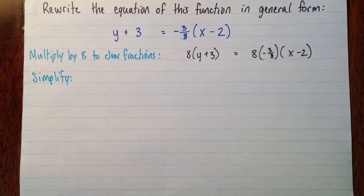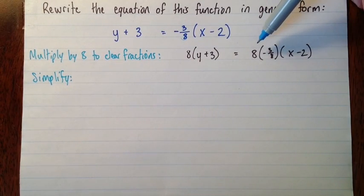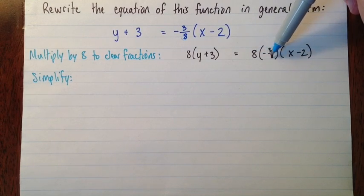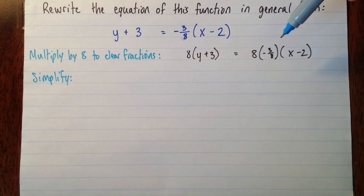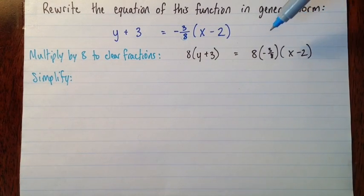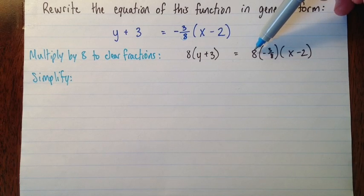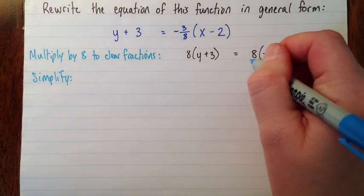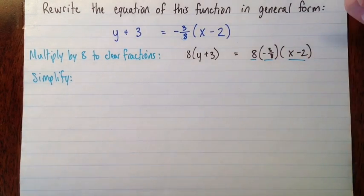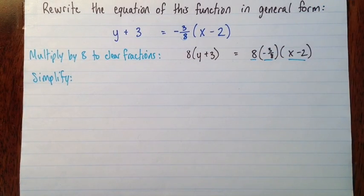Now I just want to be clear about what's going to happen on the right-hand side. A common error that I would see would be people would multiply 8 times negative 3 over 8, and then they'd also multiply 8 times x minus 2. But we shouldn't do that. If we do that, it will have the effect of multiplying the whole thing by 64. We have three terms that we're multiplying, three factors that we're multiplying, 1, 2, 3. And we're just going to multiply two of them together first.